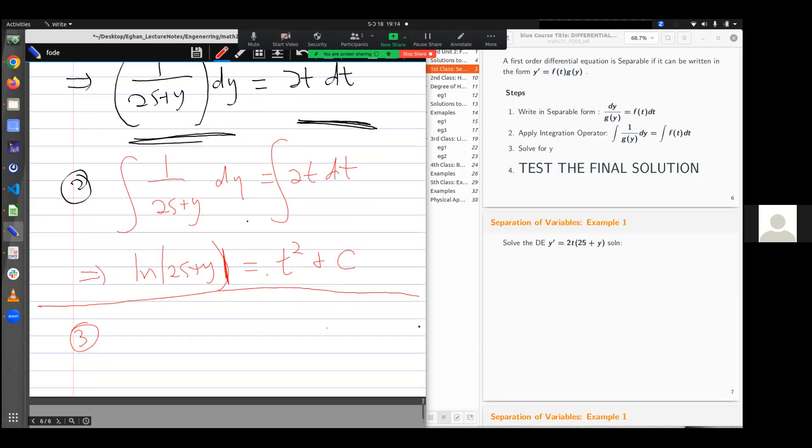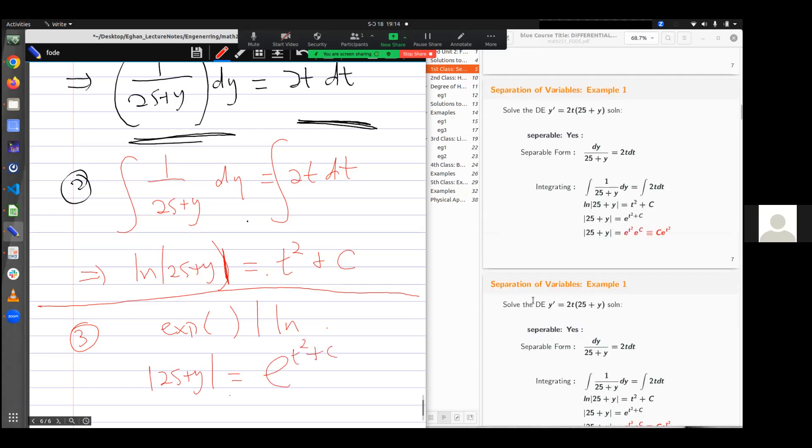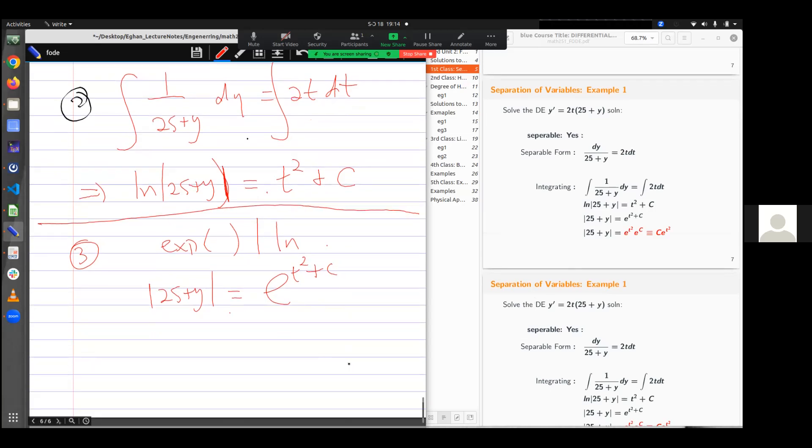I can only do that by taking exponential of the functions of the expressions there. Exponential and natural log have a relationship. They cancel out. And so I have my representation as 25 + y is equal to exponential(t² + c). Now using indices, I can write this out as e^(t²) times e^c.